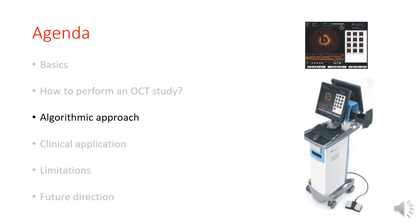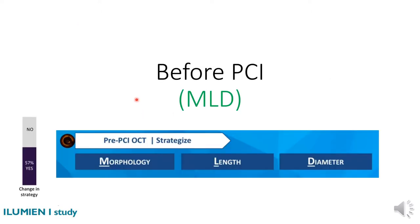To maximize the benefit from your OCT catheter, it is better to follow an algorithmic approach. Before PCI, during lesion assessment, we use the mnemonic MLD: M for morphology, L for length, D for diameter. Adopting this strategy has been shown to change the operator's decision in about 57% of cases — data from the ILUMIEN I study. This means we might discover a calcified lesion that needs preparation, or find that we have to cover more or less length, and change the stent diameter after getting the OCT images.